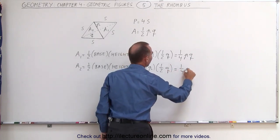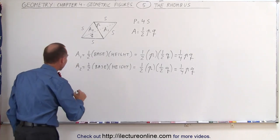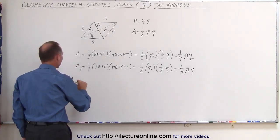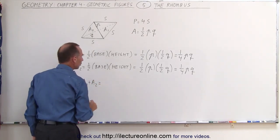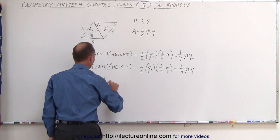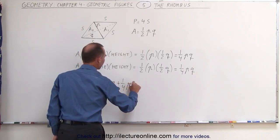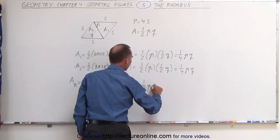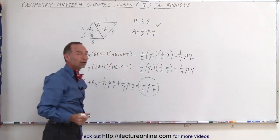And so we get one quarter P times Q. If we now add both of those areas together, we now say that the area of the rhombus, I'll call A sub R, is simply equal to the sum of the two areas of the two triangles, which is equal to one quarter P times Q plus one quarter P times Q, which is equal to one half P times Q, which is what we wrote over there.